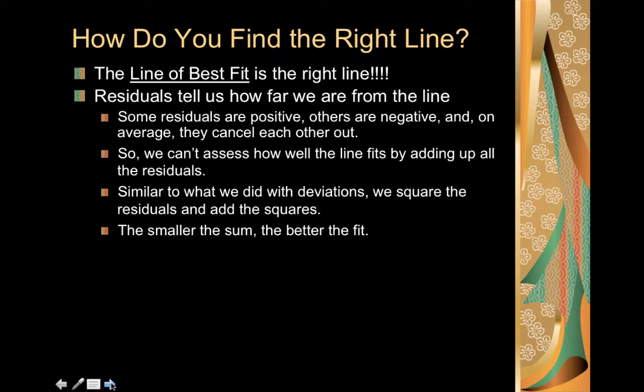So we won't be able to determine how well the line of best fit actually works by adding the residuals up if they cancel each other out. So what we end up doing is we end up squaring our residual values. By squaring our residual values, we end up with only positive values. And then we're able to determine that the smaller the sum, the better the fit. We are looking for the smallest sum of our squared residuals.